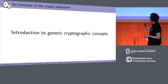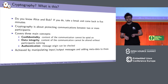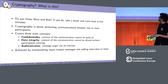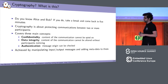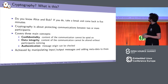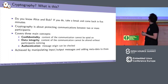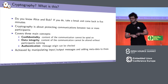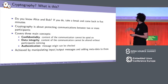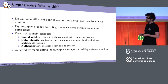So let's start with the basic concepts. If you've already heard about Alice and Bob you probably don't need this introduction, but for those who don't know these people I'll try to explain what cryptography is about. Cryptography is about ensuring that a communication between two or more people is protected, and this protection is separated into three main concepts. The first one is confidentiality, which means no one else can spy on the communication happening between those people.